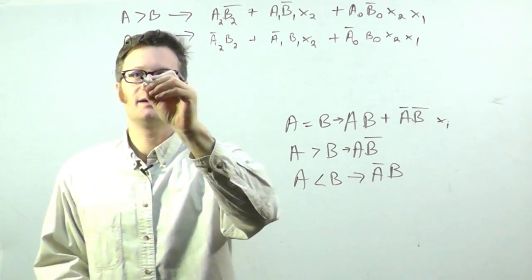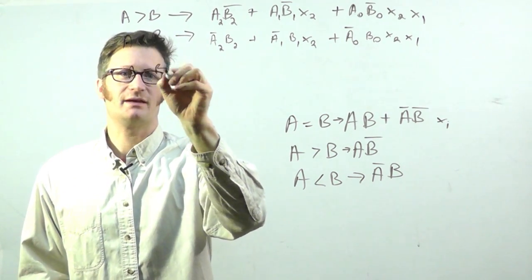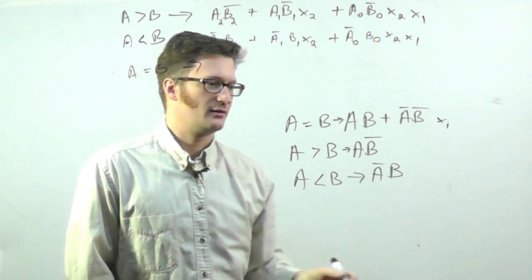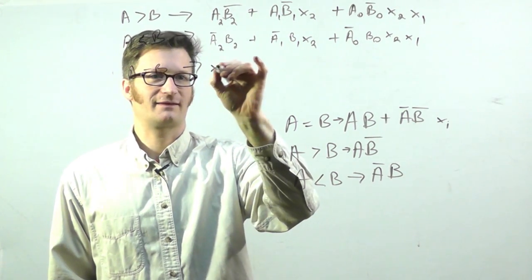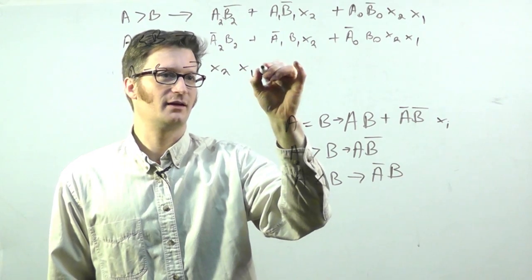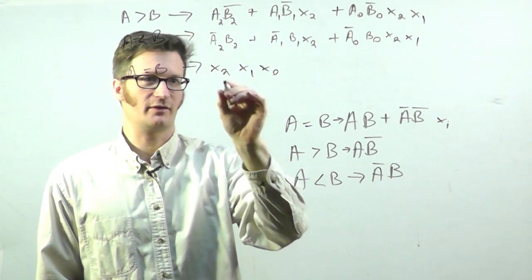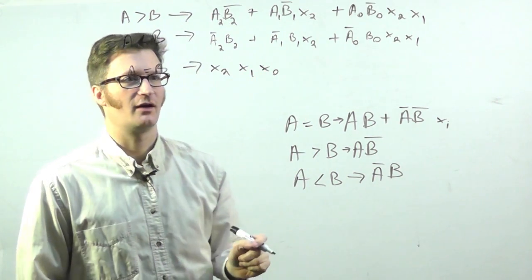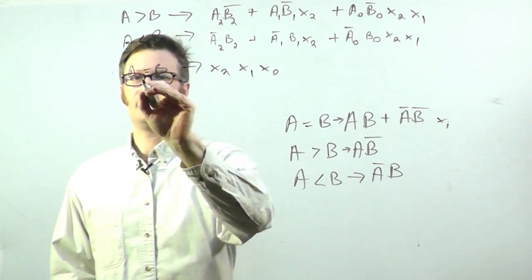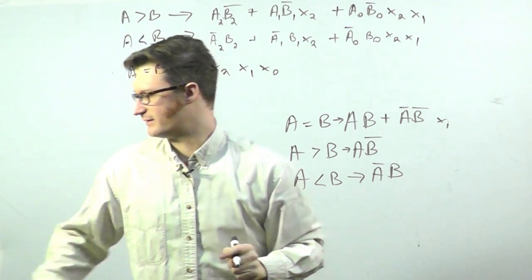And then finally, if A equals B, then what we have is X₂, X₁, X₀. So if all three of these terms are 1, then A equals B is true.